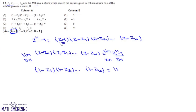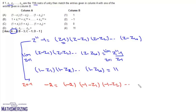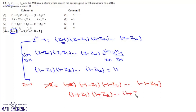Now taking Z = -1 instead, the left side gives (-1-Z1)(-1-Z2)...(-1-Z10) and (Z^11-1)/(Z-1) at Z=-1 gives (-2)/(-2) = 1. The two (-2) terms cancel, and taking (-1) common from each of the 10 factors gives (1+Z1)(1+Z2)...(1+Z10) = 1. So entry C matches with 1.